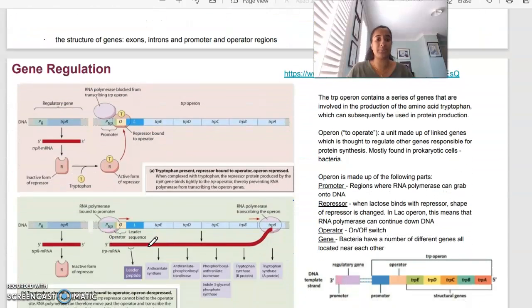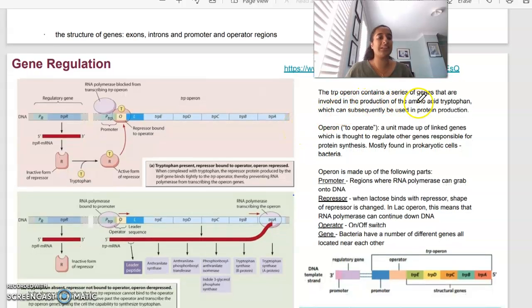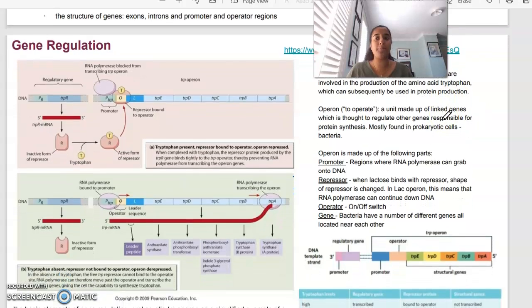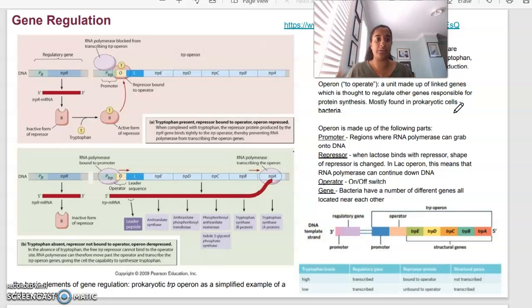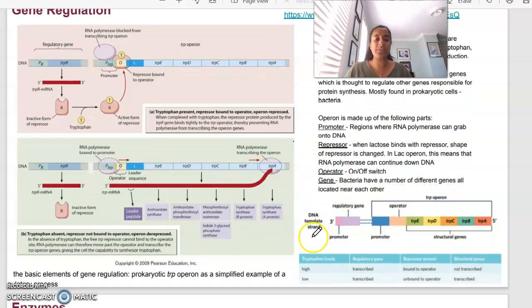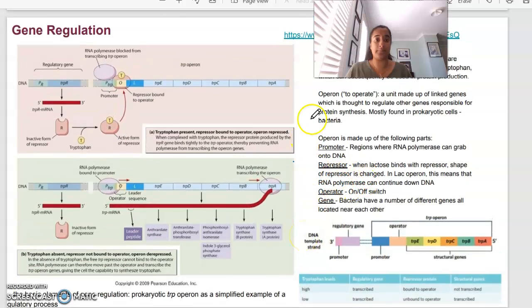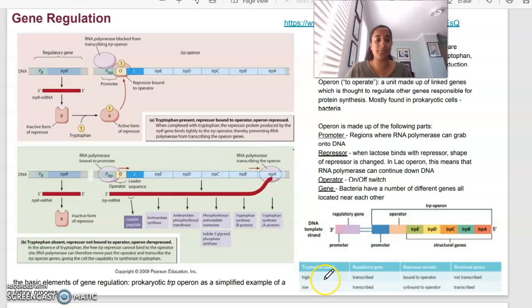The example that we look at when we talk about gene regulation is something called the TRP or the trp operon. The trp operon is basically a series of genes that are involved in the production of a particular type of amino acid called tryptophan. It can be used also in protein production. There's a few main components of an operon that you guys need to know. So the word operon is basically a unit that's made up of lots of linked genes that are thought to regulate other genes. So it's like a regulatory gene. It can regulate other genes. And it's basically made up of these parts. The promoter is the region where RNA polymerase is going to join onto the DNA. The repressor is what might bind to stop the progression of things from happening. The operator acts as your on and off switch. And the genes themselves are all located near each other to transcribe for something.